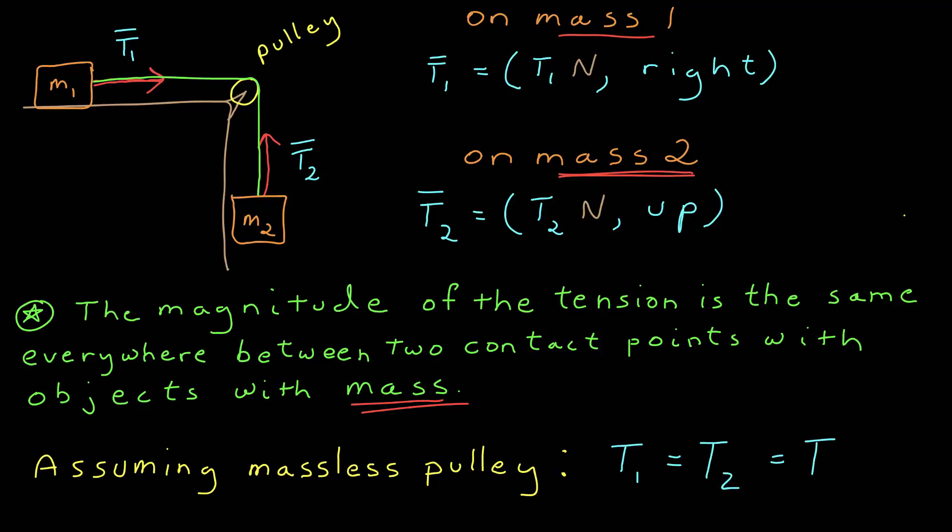For example, in this case, assuming the pulley is massless, then the tension in this part of the string is equal to the magnitude of the tension in this part of the string, and T1 is equal to T2.